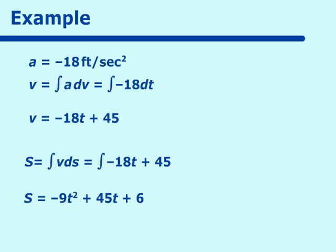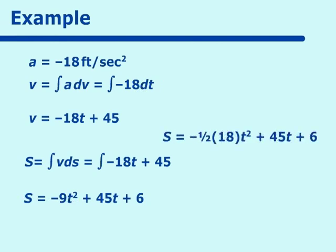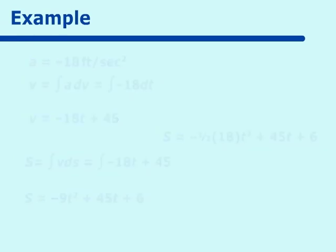In pre-calculus, this equation reads in general form: S equals negative one-half G T squared plus V-sub-0 times T plus the initial height from the ground. If you had memorized this formula, you did not need differential equations. For our problem it becomes negative one-half times 18 T squared, plus initial velocity 45 times T, plus initial height 6 feet — giving the same equation. So either way, whether you use the formula directly or develop it, both approaches work.